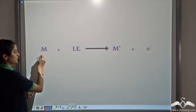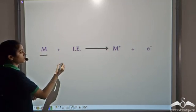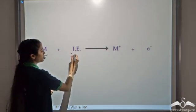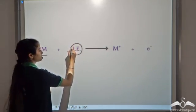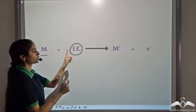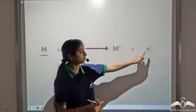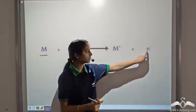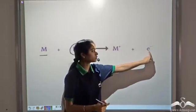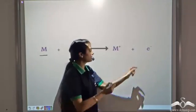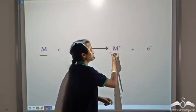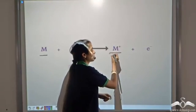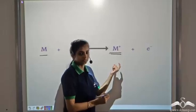So there is an atom — you provide it with ionization energy, and this helps to remove an electron from the atom. When this electron is removed, we are left with a positively charged ion.